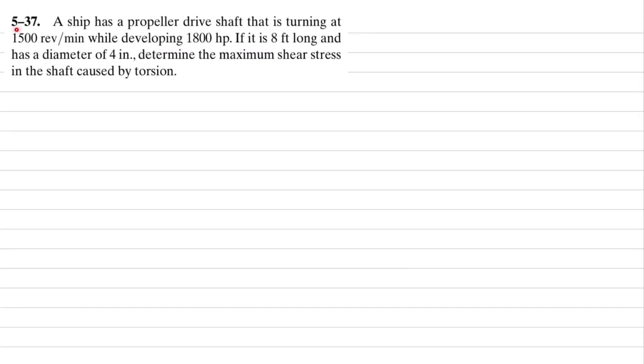Welcome back to Problem 5-37. A ship has a propeller drive shaft that is turning at 1500 revolutions per minute while developing 1800 horsepower. If it is 8 feet long and has a diameter of 4 inches, determine the maximum shear stress in the shaft caused by torsion. First, we will write the given data.